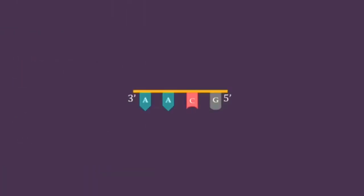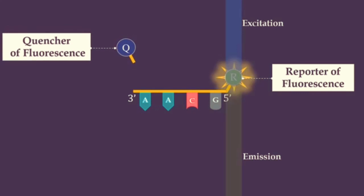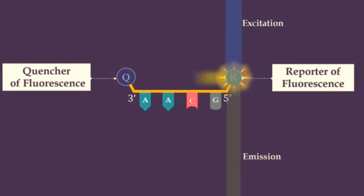The Taqman probe consists of a fluorophore covalently attached to the 5' end of the oligonucleotide probe. The fluorescence is emitted by the fluorophore when it is excited by the cycler's light source. Also, this probe consists of a quencher at the 3' end. The close proximity of the reporter to the quencher prevents detection of its fluorescence.